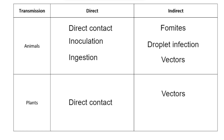Vectors are also an example of indirect transmission for plants. Insects such as aphids, when sucking the sugar sap in the stem of a plant, can transmit pathogens as they move to feed on another plant. Humans can also act as vectors — using an axe to chop down a diseased plant and then using the same unsterilized axe on another plant can result in transmission. Wind or water can also act as vectors, for example carrying fungal spores onto a healthy plant.